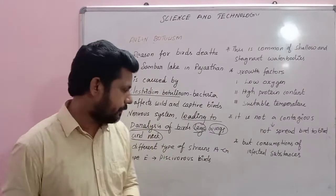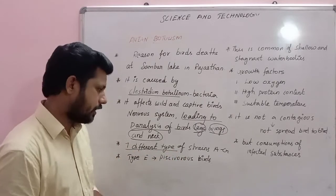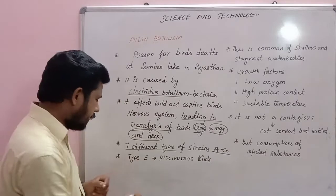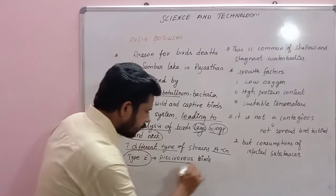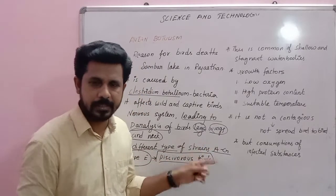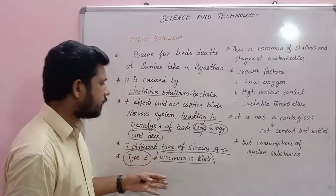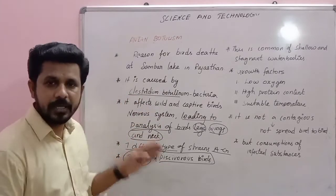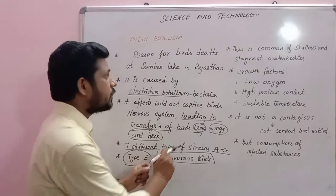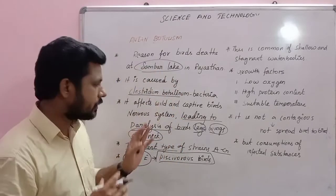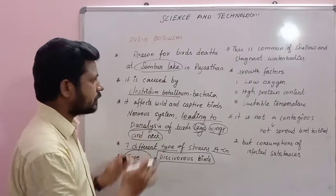At Sambhar Lake, there are 7 different types of strains, from A to G. It can mostly affect piscivorous birds — that is, birds that eat fish. The Type E strain is very prevalent in this incident and is the strain highlighted in this case.